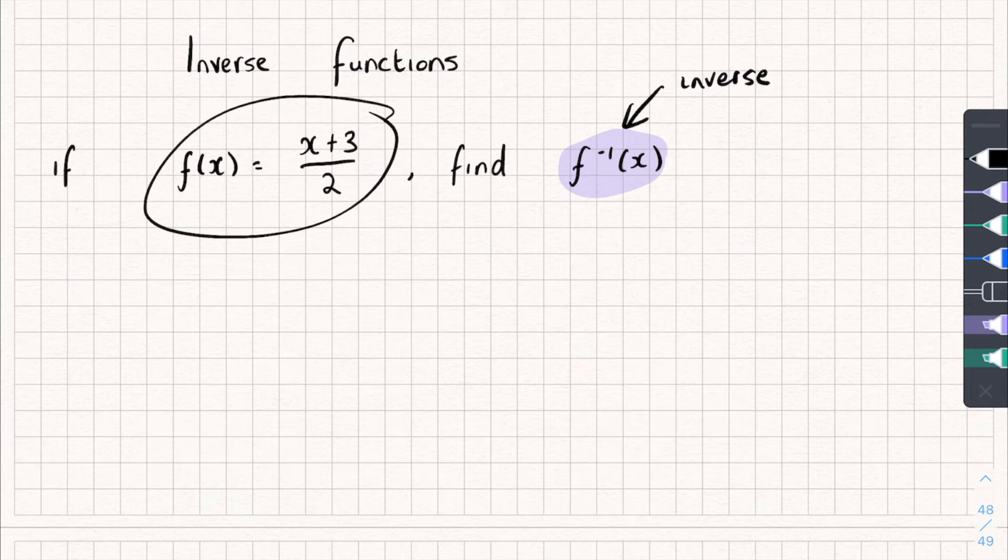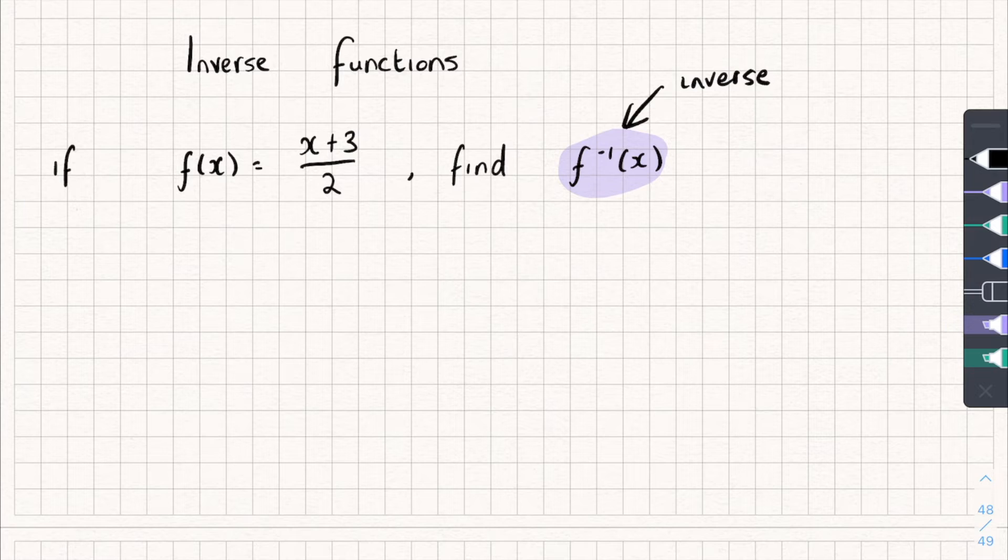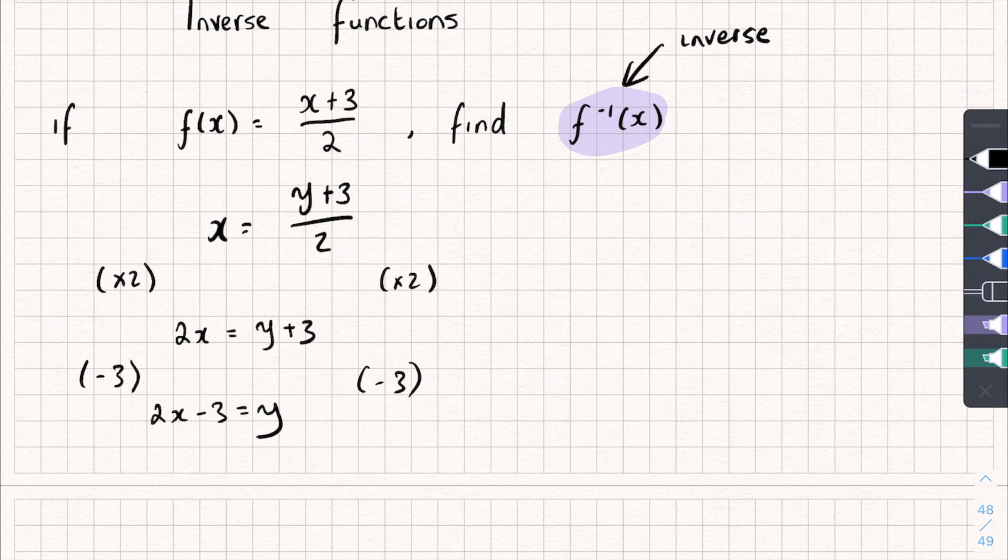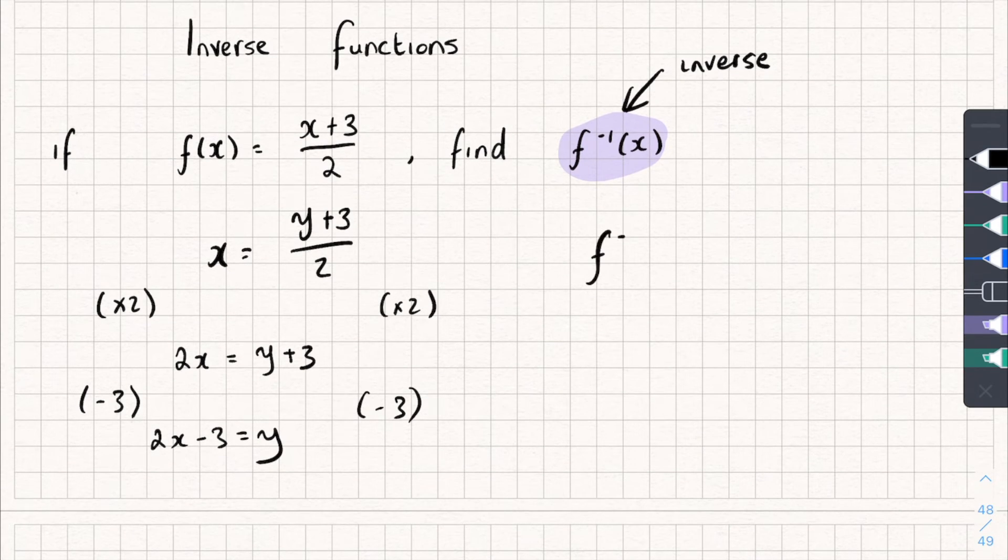So here's how we're going to do it. We're going to take the original function, and we're going to, wherever there's an f of x, we're going to write x, like that. And then we're going to write, wherever there's an x in the original function, we're going to write y. So we're going to get x is equal to y plus 3, all divided by 2. From here, we're going to rearrange this to make y the subject. So to do that, I could times both sides of this equation by 2. And we get 2x equals y plus 3. And then I'm going to subtract 3 from both sides. And we get 2x minus 3 equals y. Now, I'm nearly done. All I need to do is, wherever there's a y, I just need to swap it out for my inverse function, like this. So the inverse function is 2x minus 3.